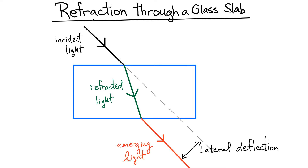Today I want to look at a problem of an incident light ray that's going to hit a glass slab that has a certain thickness. Once it hits the slab it undergoes some refraction, so there's a refracted light ray that goes through the slab, eventually hits the opposite surface, and again there's more refraction that happens at the other surface, and you get an emerging light ray. The emergent light ray is actually parallel to the incident ray, but it's displaced because of the refraction. In this problem I'm interested in calculating what is this lateral deflection that happens as a result of the refraction through the glass slab.